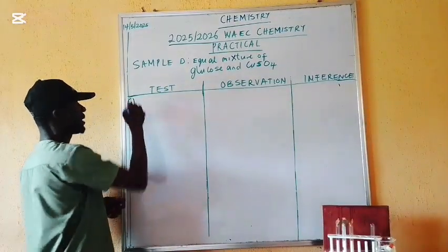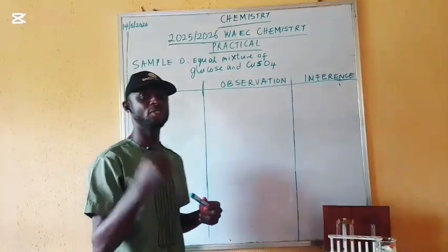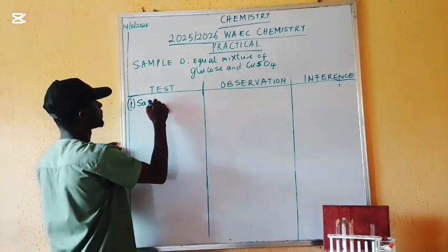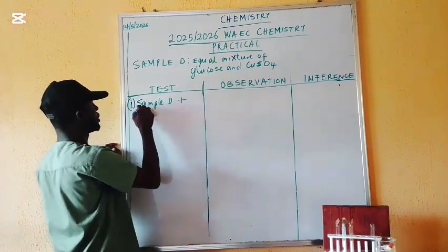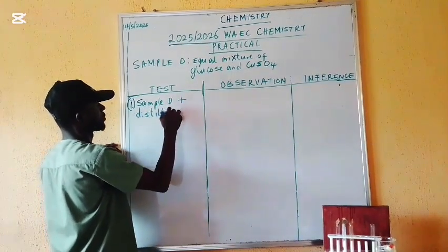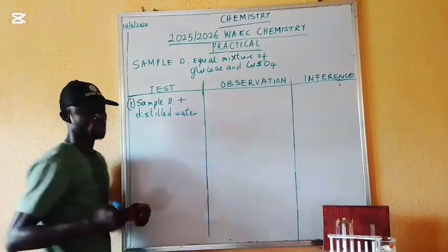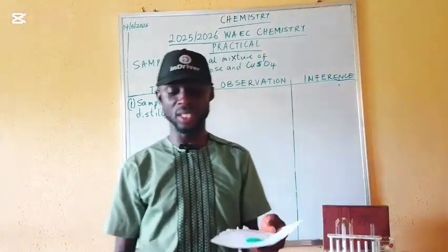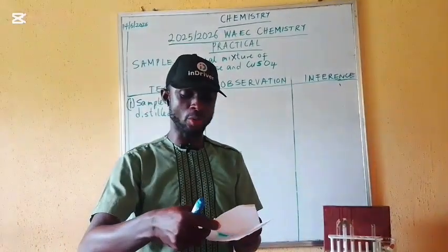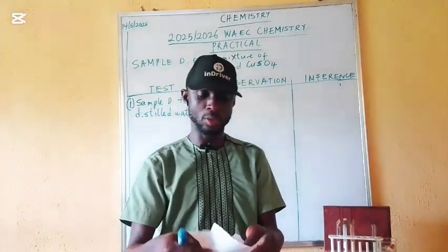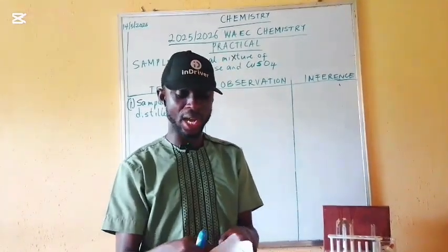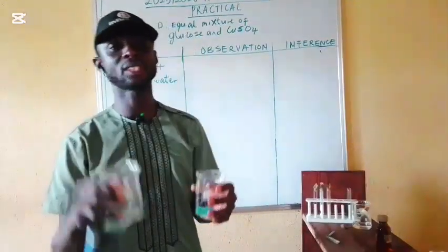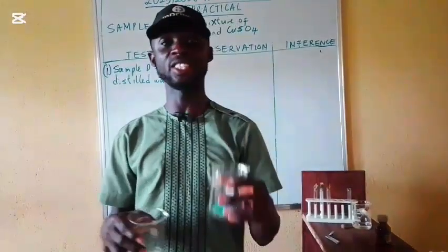The first test they may ask us to do is the addition of distilled water to our sample. So we write: Sample B plus distilled water. Let's add our water to our sample and look at the observation we are going to see.